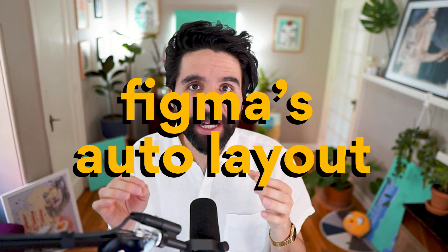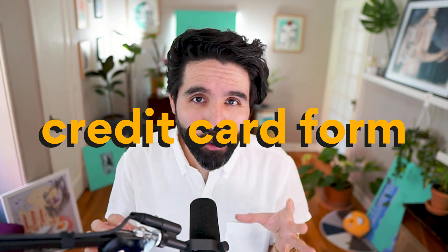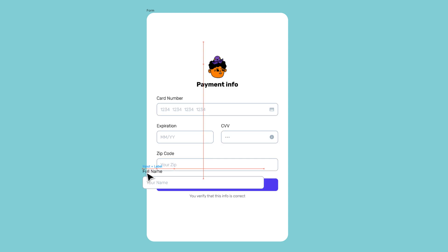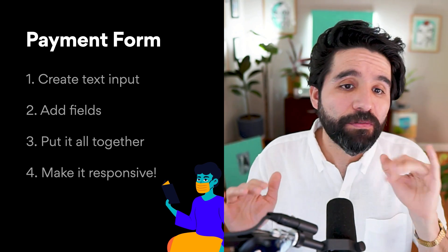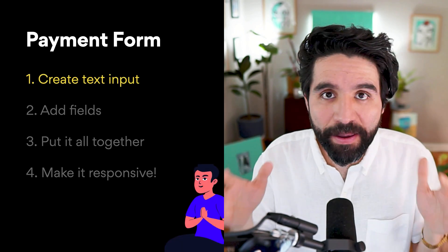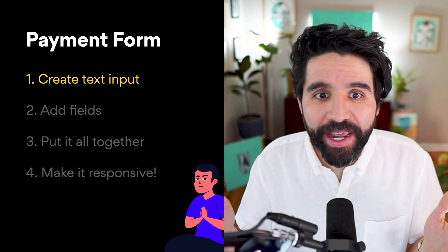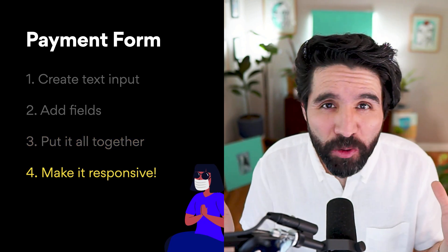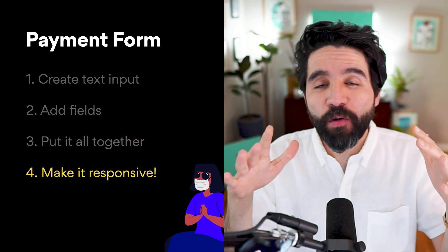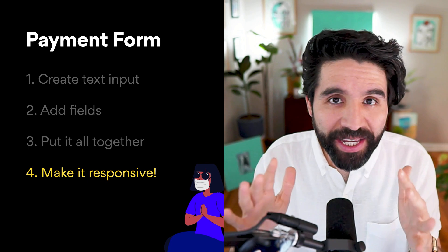Hello, my name is Pablo Stanley and this is part of a crash course on Figma's auto layout. In this lesson we'll design a credit card form, which is an essential part of a flow but really easy to mess up. We'll use auto layout to create a clean and dynamic design that can adapt to different sizes, and we'll explore different ways for it to grow or shrink flawlessly.